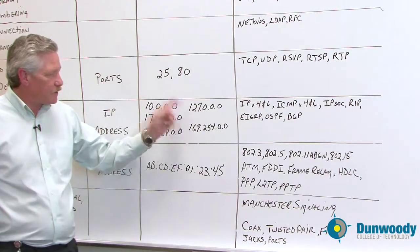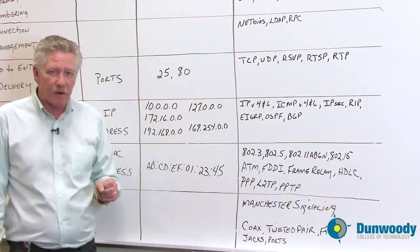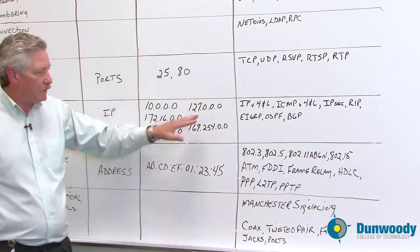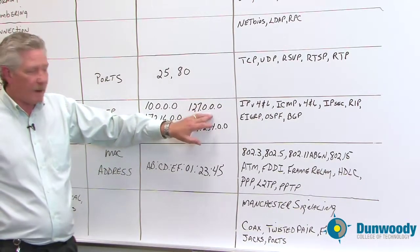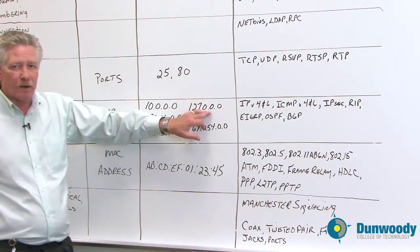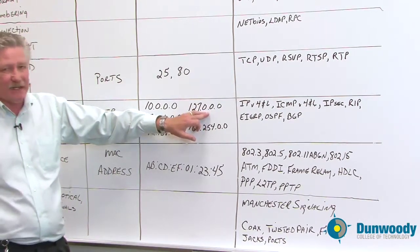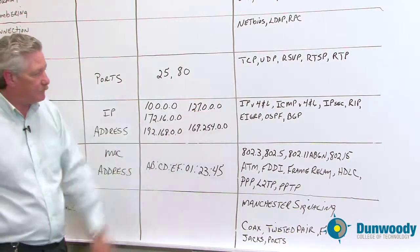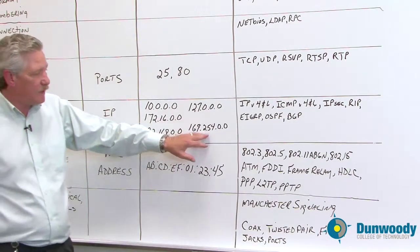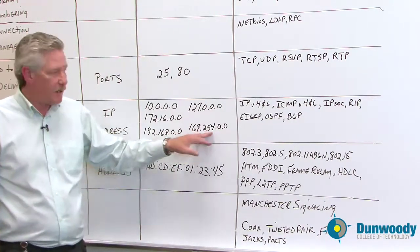The other two numbers, the 127 is the loopback address. And I said that the nice thing about the loopback address is, one, you can test your network interface card to see if it's working. Two, it also checks to see if the TCP IP stack is working. And then the last 169.254 is the APIPA address.